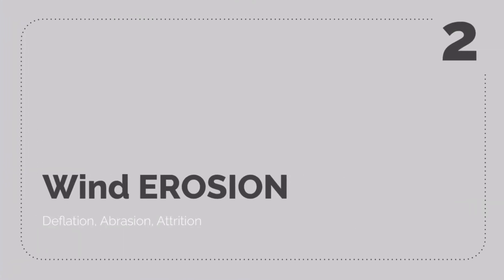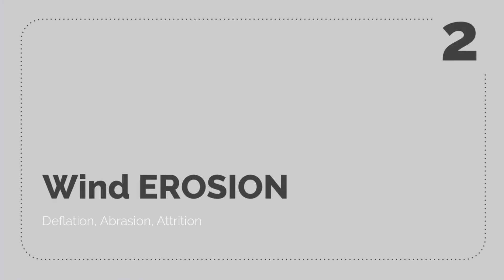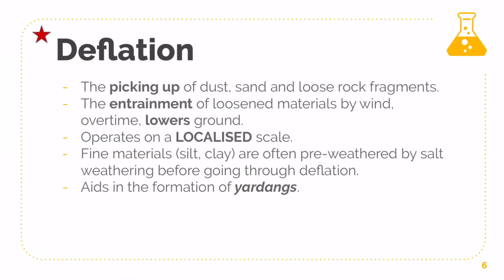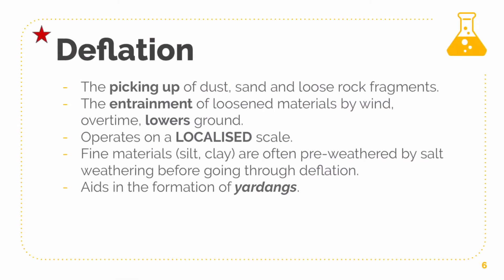Firstly, you have got wind erosion. I'm going to cover all three: deflation, abrasion, and attrition. Deflation — very simply put — is the picking up of dust, sand, or any loose rock fragments and particles; it is essentially the entrainment of loosened materials by wind. Over time, this would lower the ground, which is why you'll notice this is important for yardangs.